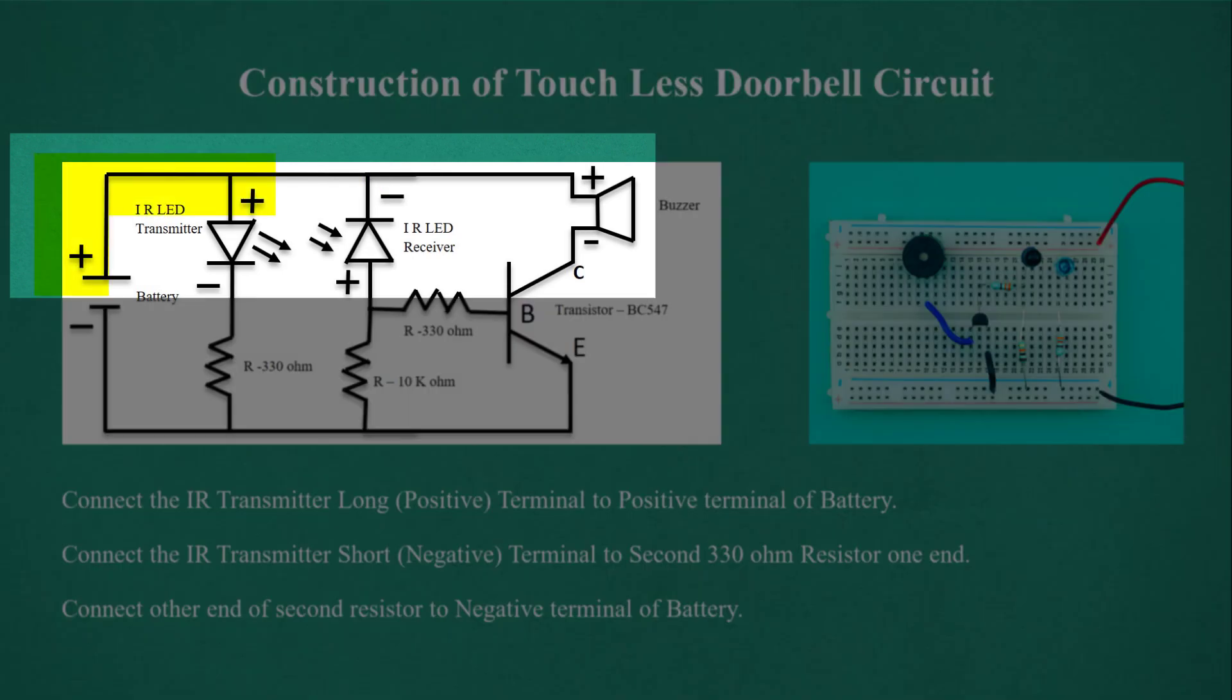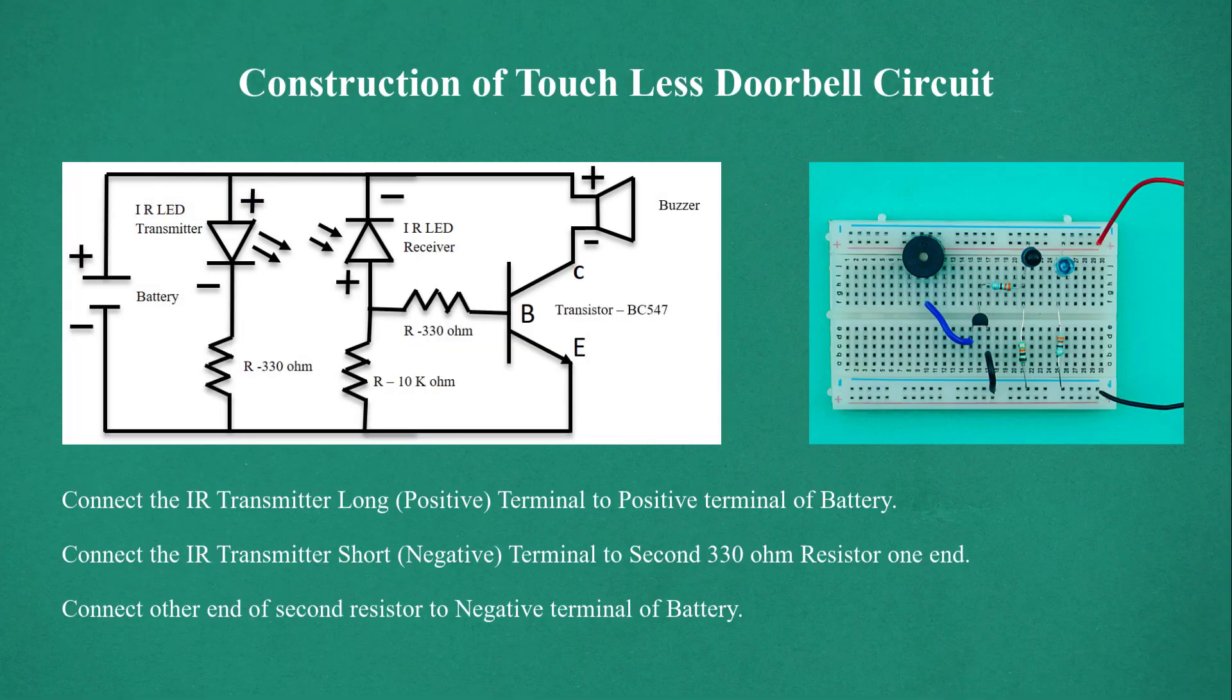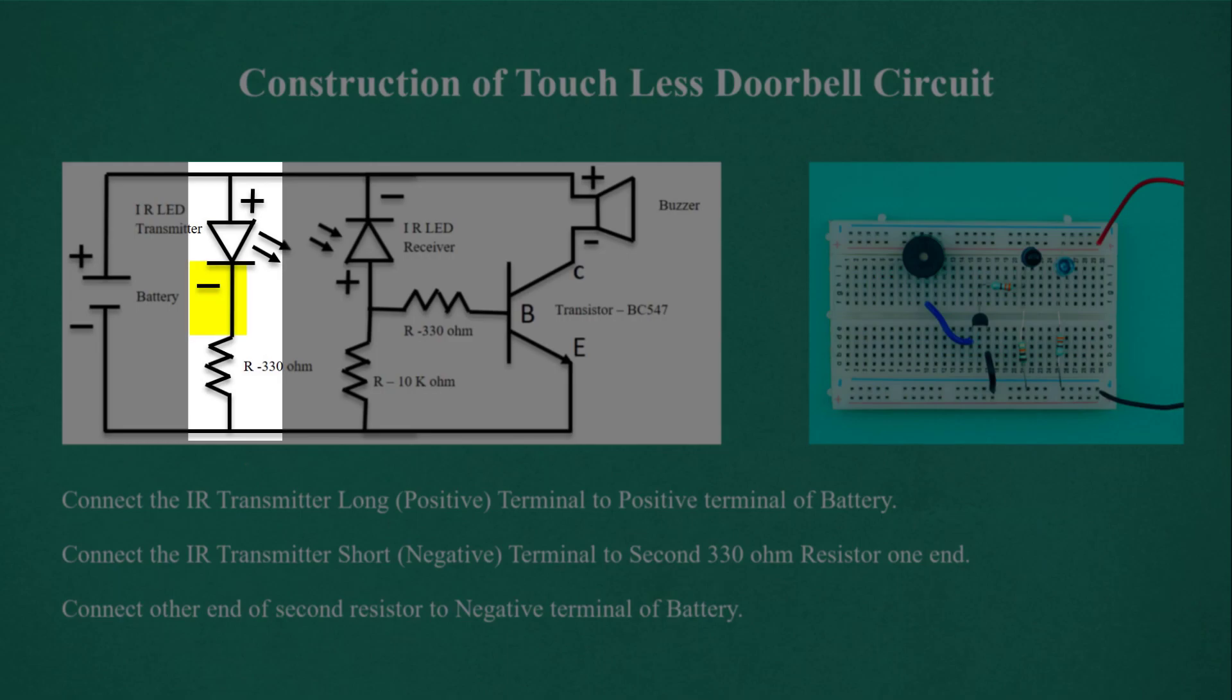Connect the IR transmitter long positive terminal to positive terminal of battery. Connect the IR transmitter short negative terminal to second 330 ohm resistor one end. Connect other end of second resistor to negative terminal of battery.